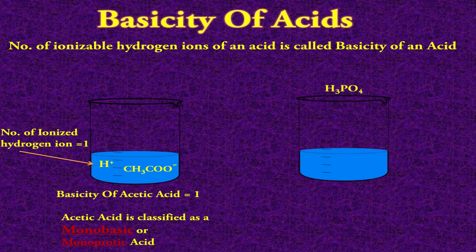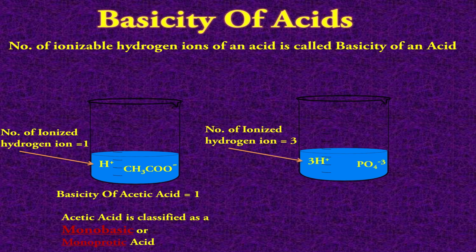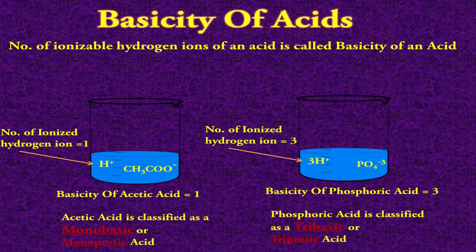Let's see the example of H₃PO₄, also known as phosphoric acid. When it is dissolved in water, it breaks down into ions — it gives 3 hydrogen ions and a phosphate ion PO₄³⁻. Here, the number of ionized hydrogen ions is 3, so the basicity value of phosphoric acid is 3. On the basis of this basicity value, it is classified as a tribasic acid or triprotic acid.